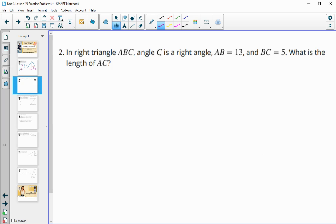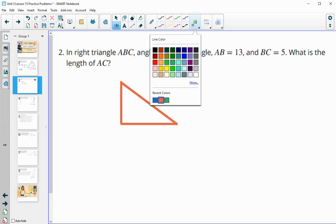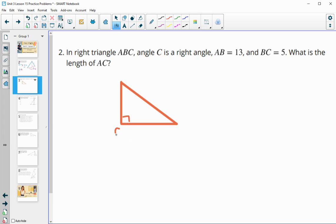Number two, in a right triangle ABC, angle C is the right angle. And then it gives us two of the side lengths and wants to know the third. So if we go ahead and just draw ourself a right triangle so that we can label it, it told us that the right angle is letter C. So then you can put A and B wherever you want on these other two. So AB, the hypotenuse, is 13.